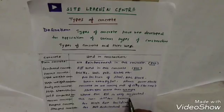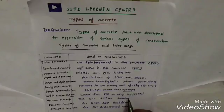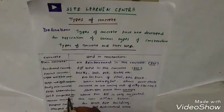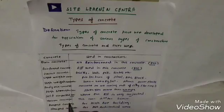The eighth type is self-compacting concrete. Where reinforcement is very congested — such as in columns, beams, and footings — the needle vibrator cannot enter to vibrate the concrete. In those situations, we use self-compacting concrete, which compacts on its own without vibration.